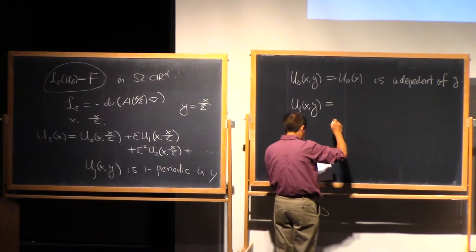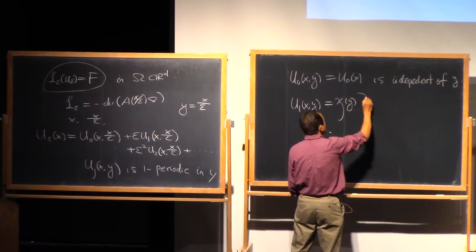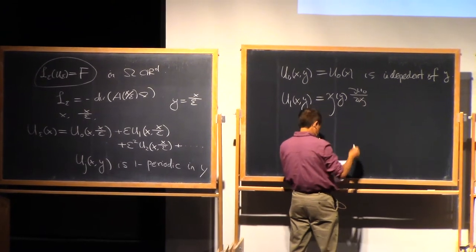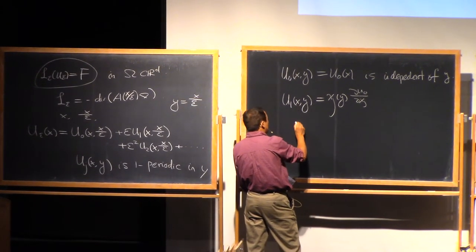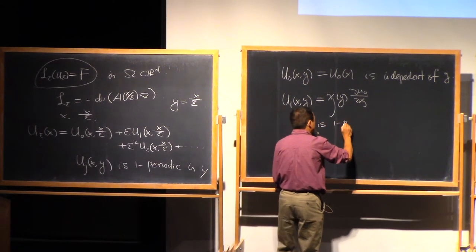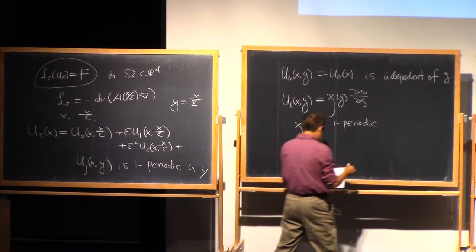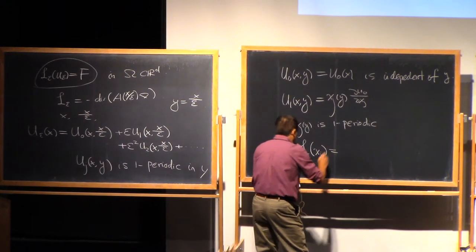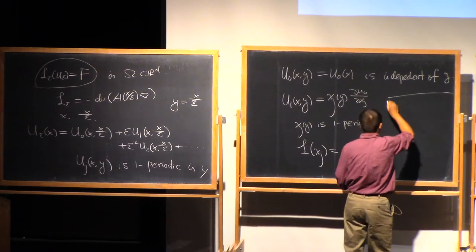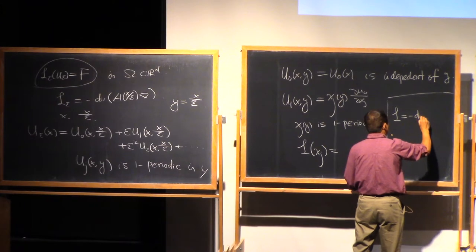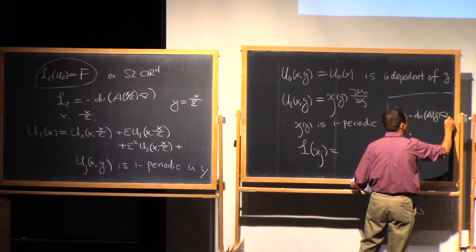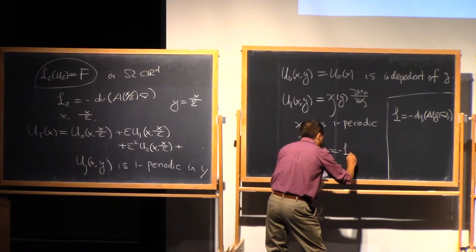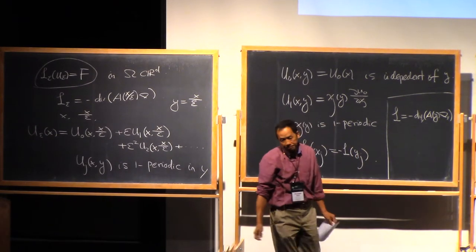And the second term appears in this form. This is χ_j of y, and dU_0/dx_j here. And this χ_j of y is one periodic, and satisfies the equation L_0(χ_j) is equal to negative L applied to the linear function y_j. Here the L is divergence of A(y) gradient in y.